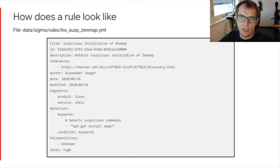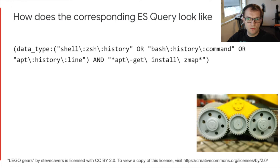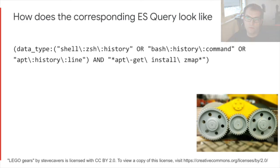So let's have a look at how we expect the rule to be translated into an Elasticsearch query. This is what the query would look like if we would search for it in Timesketch. We have first the data type that explains basically the haystack where we are looking for the events. With the combination of the three data types, we have reduced that already. And in every one of those haystacks, we are looking for the apt-get install command. So it's pretty straightforward.